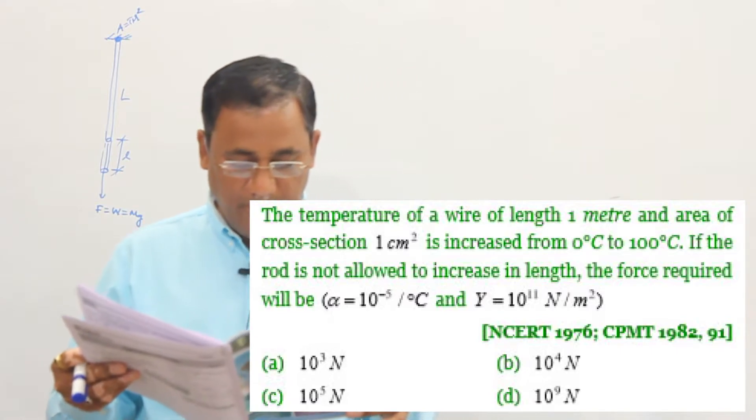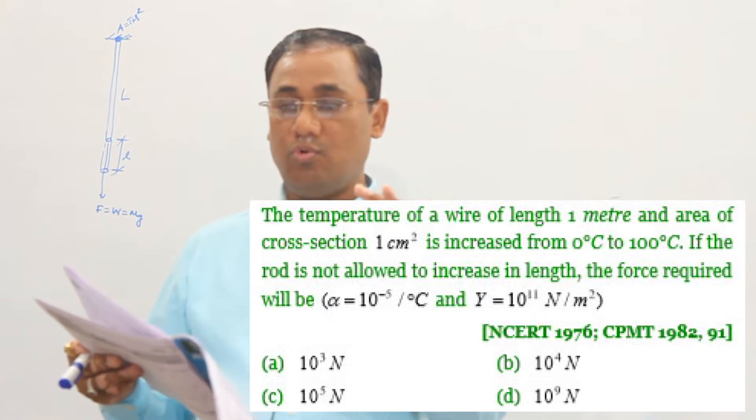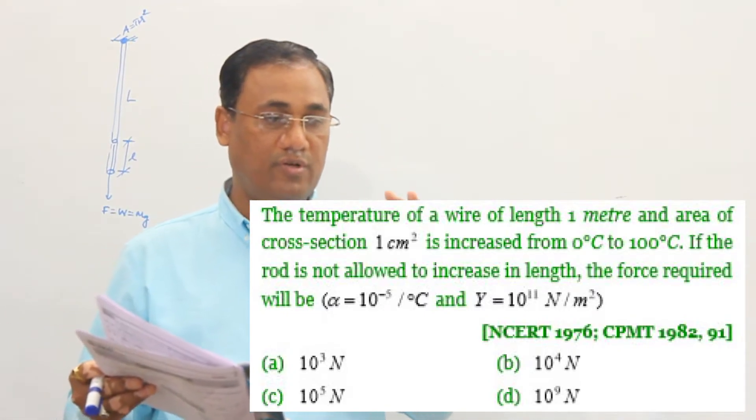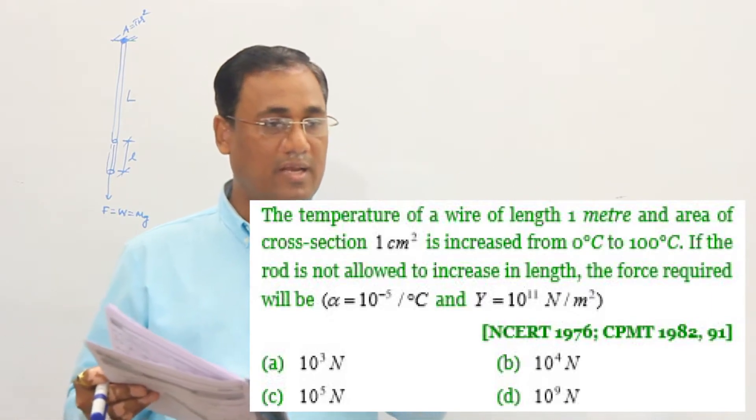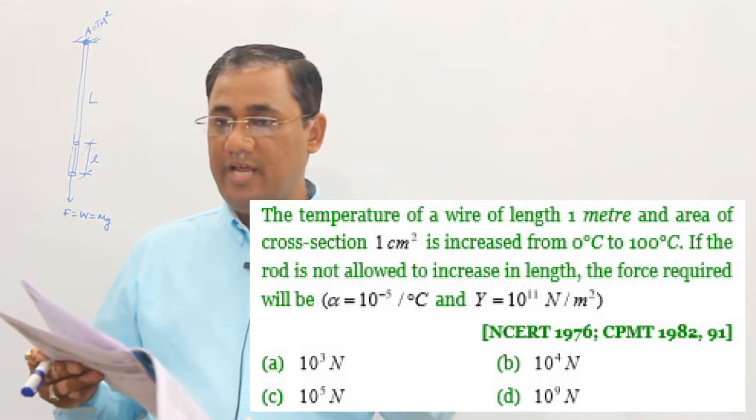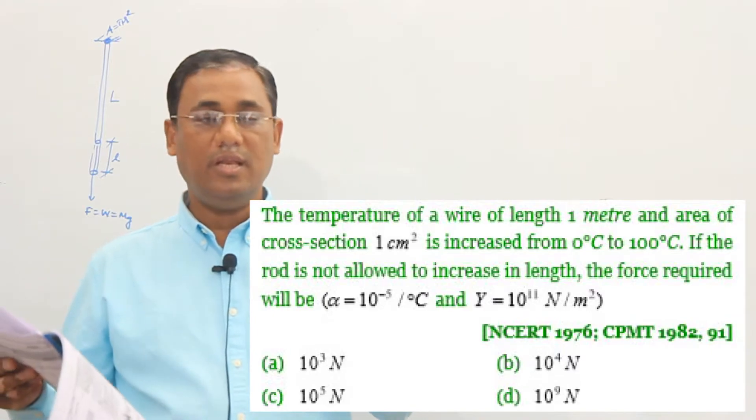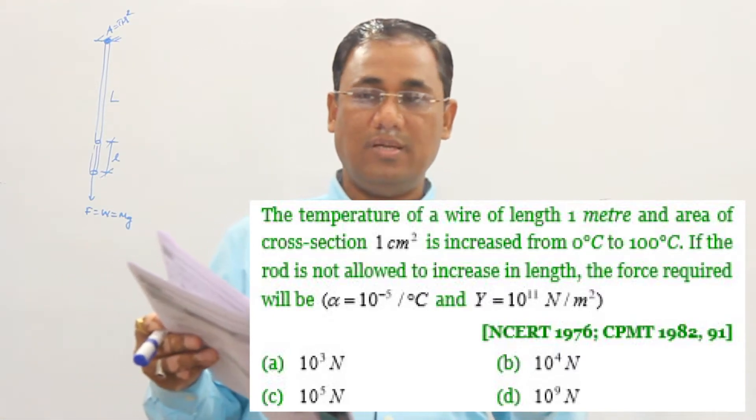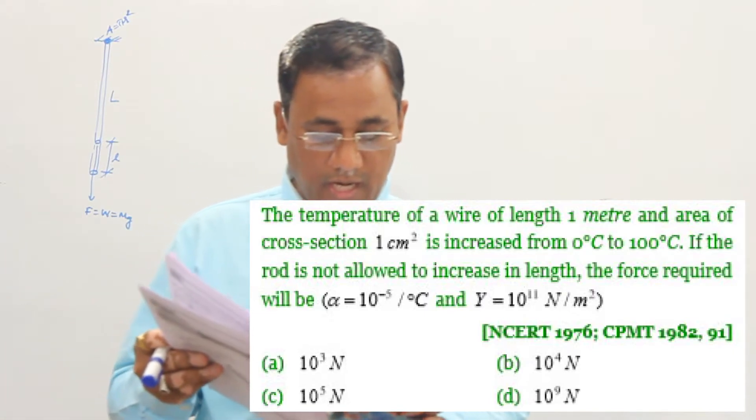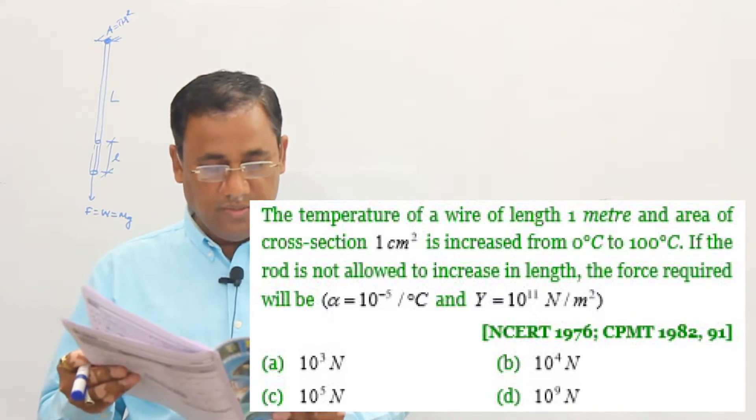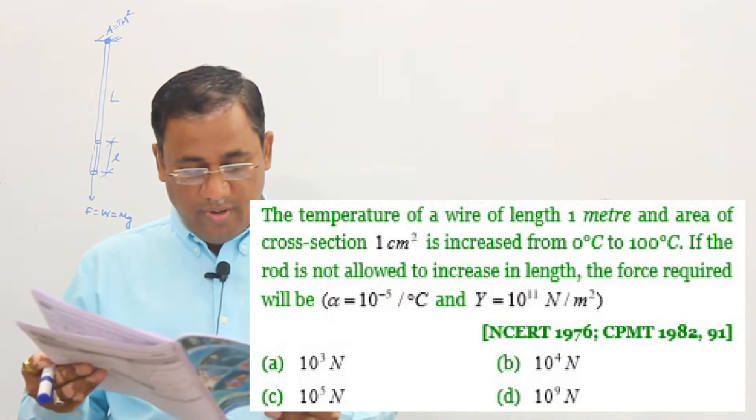Alpha is 10 to the power minus 5 per degree Celsius. Alpha is the coefficient of linear expansion. Coefficient is constant, always keep it, whether coefficient is physics, chemistry, bio, math - coefficient is always constant. So here is linear expansion because the rod is the length of the rod, so it will increase linearly. This is the coefficient of linear expansion. That value is given: 10 to the power minus 5, unit is per degree Celsius. And Young's modulus is 10 to the power 11 newton per meter square.